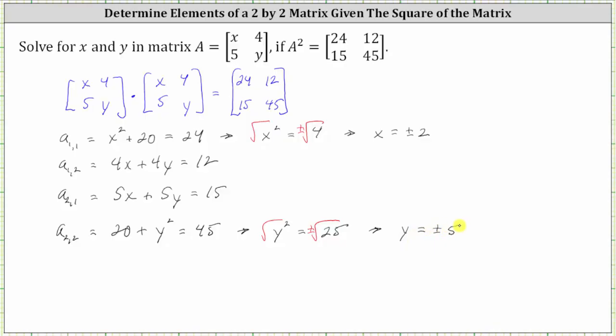But remember, x and y must satisfy all four equations, not just the first and fourth equations. So let's take a look at the second equation of 4x plus 4y equals 12 and see which values of x and y satisfy the equation.